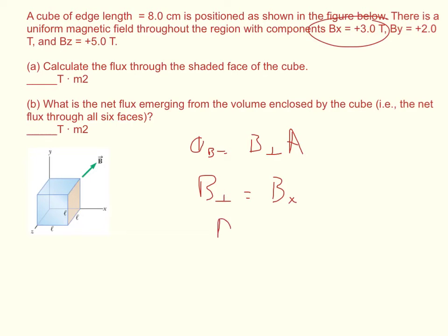So now all I have to do is define the area. So this is a cube and it has a length of 8 centimeters, so the area would be 8 centimeters times 8 centimeters. I want that in SI units of meters, so I got to take it times 10 to the negative 4th, and that'll give me units of meters squared. When you plug in all your numbers, so 3 times 8 times 8 times 10 to the negative 4th, 0.0192 Tesla times meters squared.